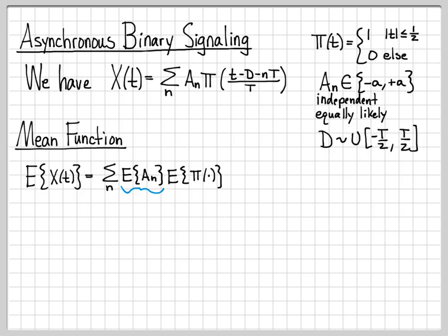So half the time, it's equal to negative a, and half the time, it's equal to positive a. The expected value of this random variable is a half times a plus a half times negative a, which is equal to zero.